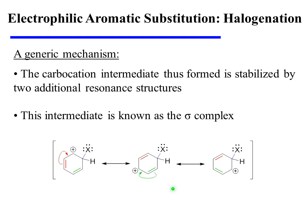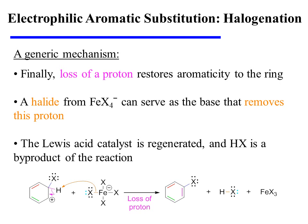This resonance hybrid of all of these resonance structures is an intermediate known as the sigma complex. In the last step of the mechanism, a proton is lost to restore aromaticity to the ring. It is a halide from the iron tetrahalide that serves as the base to remove this proton. The Lewis acid catalyst is regenerated and HX is formed as a byproduct.